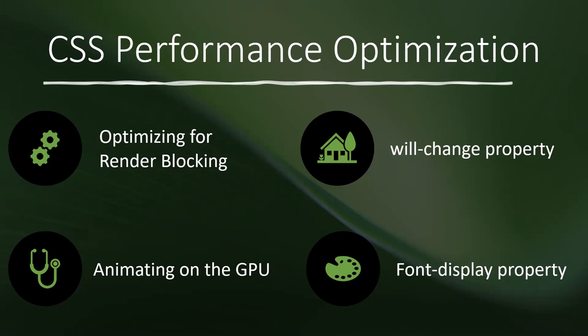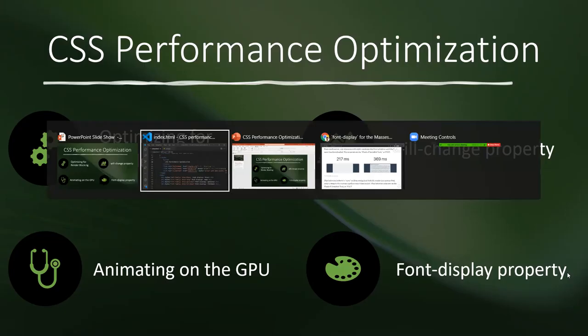At a high level, to optimize CSS we need to remove unnecessary CSS, minify and compress it, cache it, and split it. Those are the high-level points. At a lower level, the first point I'll discuss is optimizing for render blocking.